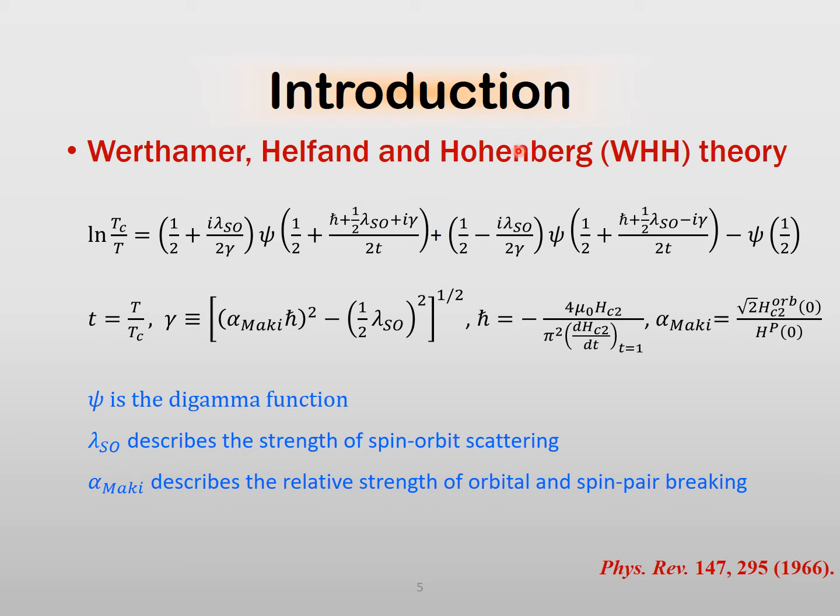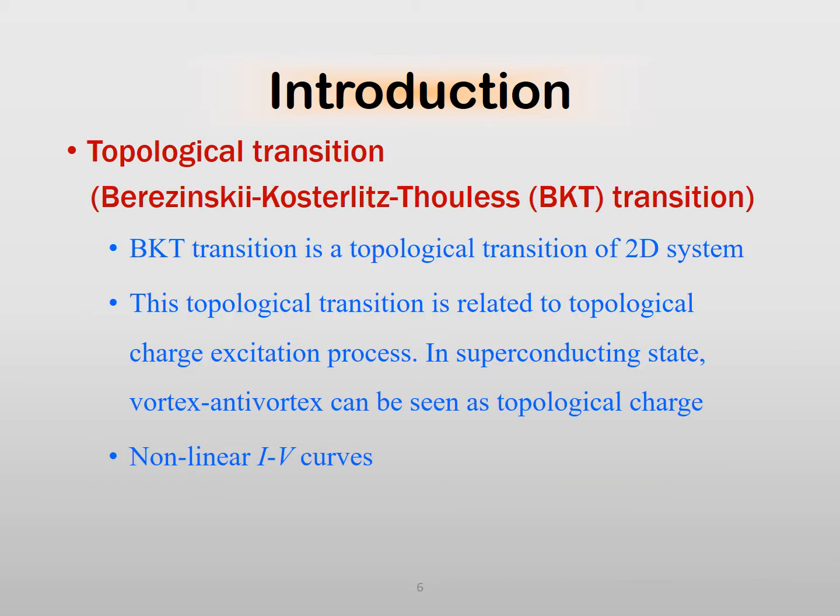Several pertinent physical quantities are listed here. For example, lambda SO, lambda alpha, and Tc. The well-known Berezinskii-Kosterlitz-Thouless, BKT for short, transition is a topological transition. In the field of superconductivity, we probe the nonlinear IV characteristics of a two-dimensional system to determine the critical temperature.